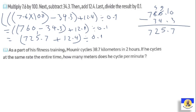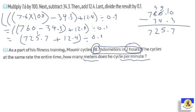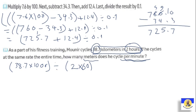The next question: as part of his fitness training, Mounir cycles 38.7 kilometers in two hours. If he cycles at the same rate the entire time, how many meters does he cycle per minute? We convert 38.7 km to 38700 meters, and 2 hours to 120 minutes. So it's 38700 divided by 120.